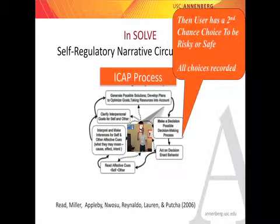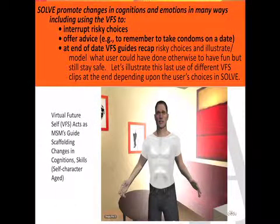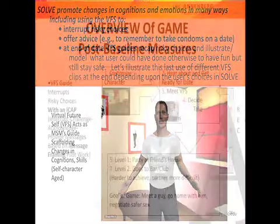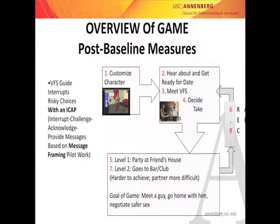This basic model was published in 2006. The user then has a second-chance choice to be risky or safe, and all choices are recorded. SOLVE promotes changes in cognitions and emotions using the virtual future self to interrupt risky choices and offer advice; at the end the VFS does a recap with different responses depending on the user's choices. As an overview of the game: after baseline measures, the user customizes his character, hears about and prepares for a date, meets the virtual future self, decides whether to use condoms in their apartment, then goes to level one — a party at a friend's house — followed by a recap, then level two — a bar or club — which is much harder, with a more difficult partner to negotiate safer sex with. The goal is to meet the guy, go home with him, and negotiate safer sex with the VFS guiding you.